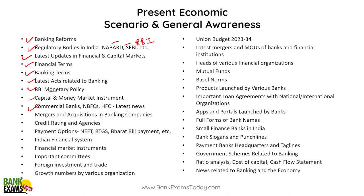Commercial banking, NBFCs, HFCs, mergers and acquisitions in banking companies, credit rating agencies, payment options, the Indian financial system — even UPI is very popular and in the news, and it's going to be available for foreign tourists coming to India, and India has a tie-up with Singapore for UPI. Financial market instruments, various committees related to banking, foreign investment and trade, growth numbers by various organizations, latest union budget, latest mergers and MOUs and acquisitions, heads of various financial organizations, mutual funds, Basel norms, various products launched by various banks, and important loan agreements with national and international organizations — very, very important and it's there in the exam.